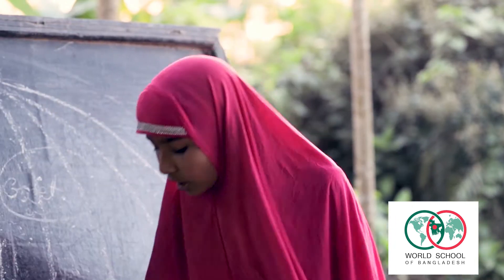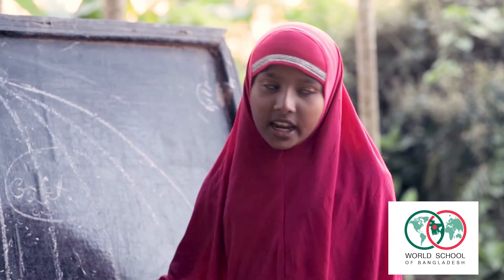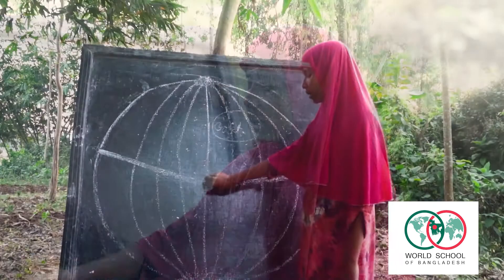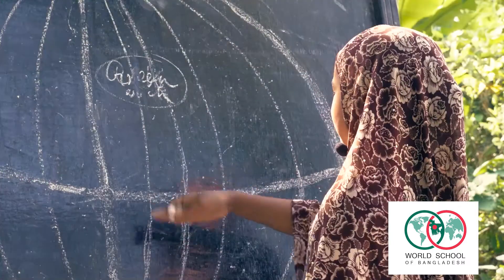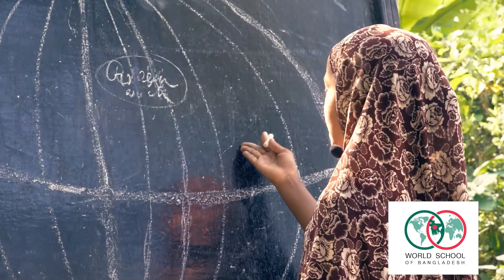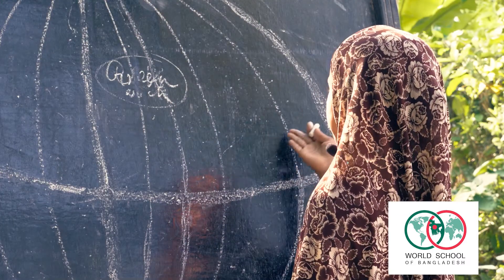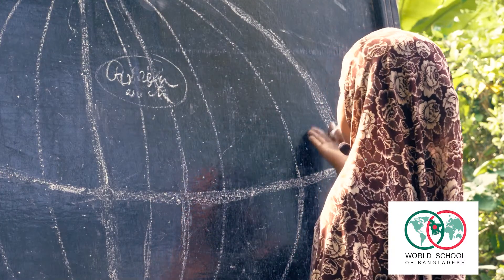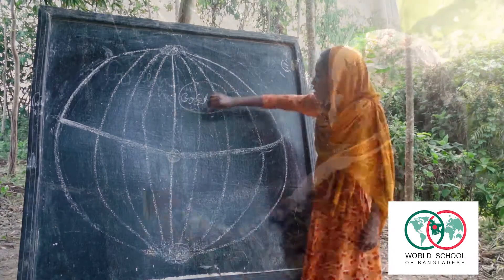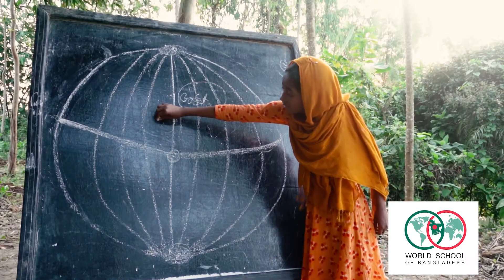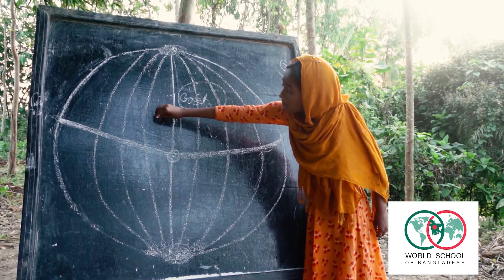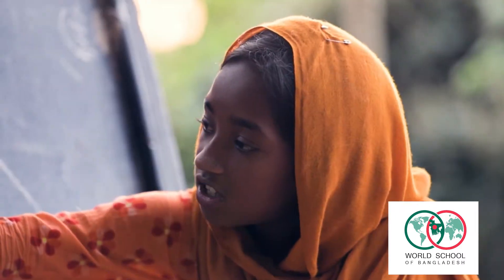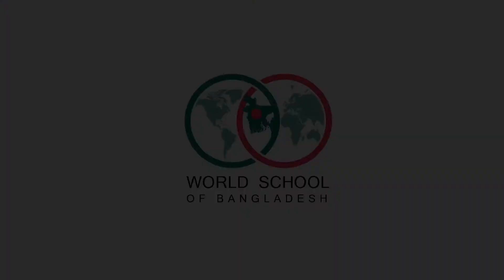North Pole and South Pole are very cold, but the equator is very hot. The right part of the Prime Meridian is East. The left side of the Prime Meridian is called West.